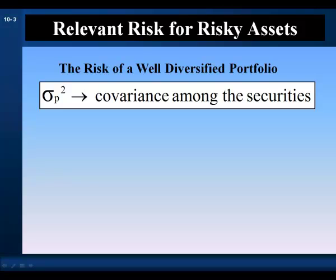In a well-diversified portfolio, unsystematic unique risk is diversified away, and the portfolio risk consists of systematic risk. Systematic risk is measured by covariance. An individual security brings its covariance with the other securities to the overall risk of the portfolio. So the relevant measure of risk for individual securities is its covariance with the other securities in a well-diversified portfolio.